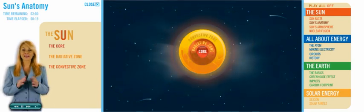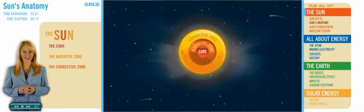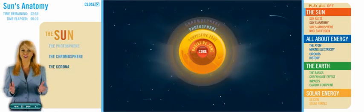The Sun is surrounded by an atmosphere which itself has three separate parts: the photosphere, chromosphere, and the corona.